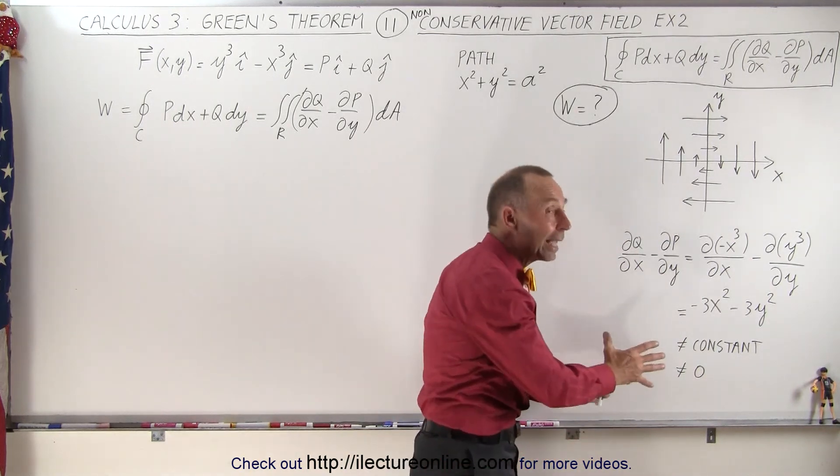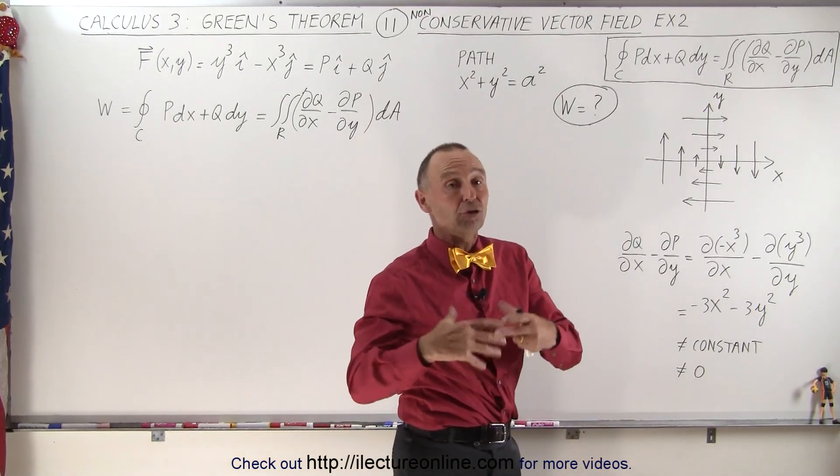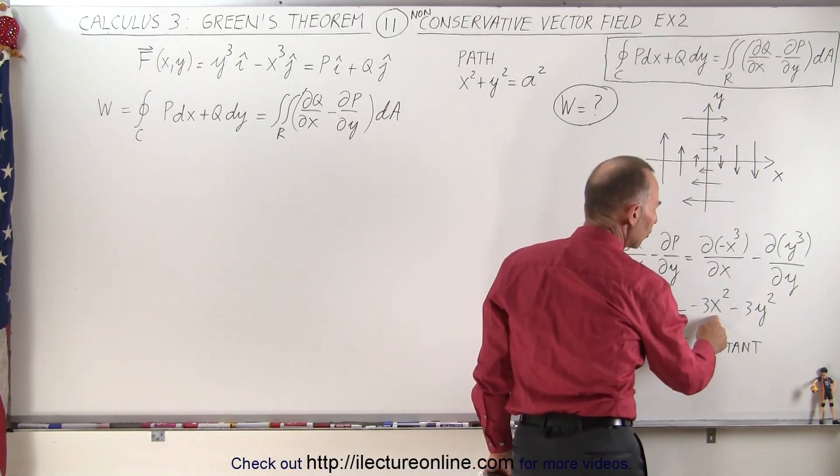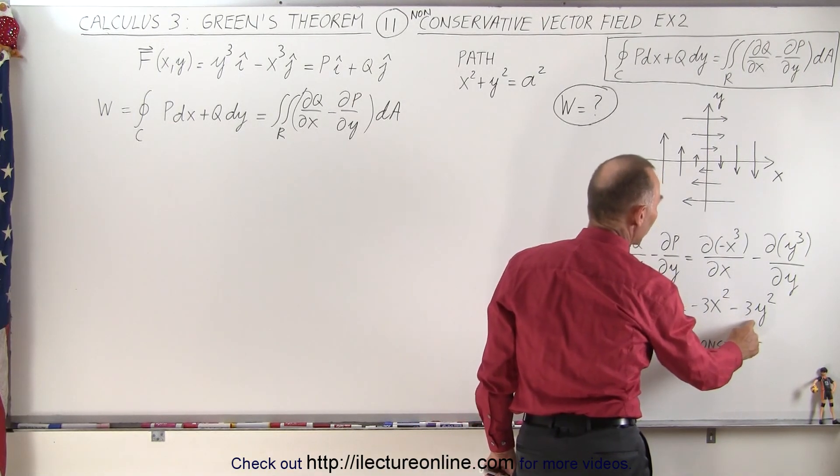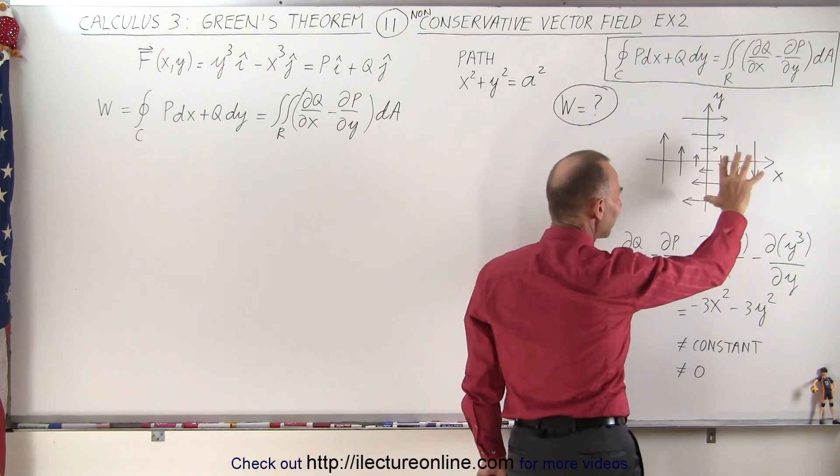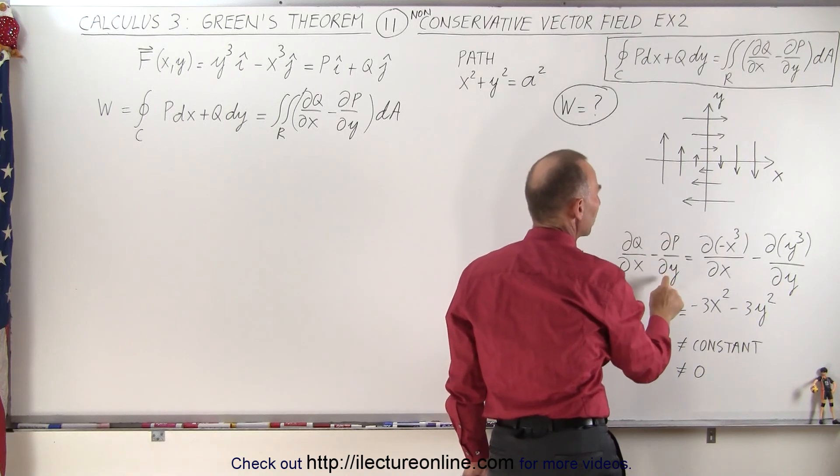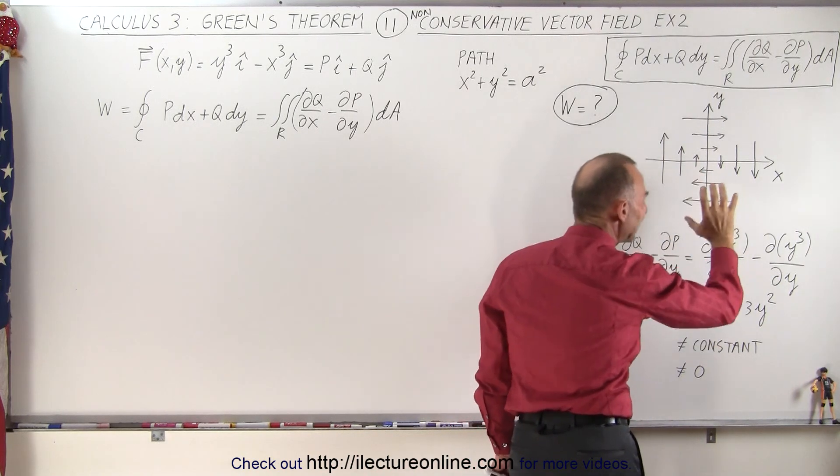But again, that's not necessarily an indicator that it's not a conservative vector field. But since the x component here is squared and the y component here is squared, notice that if we graph that, the change of that partial of q with respect to x minus partial of p with respect to y does seem to indicate that, yes, there may be a non-conservative vector field.